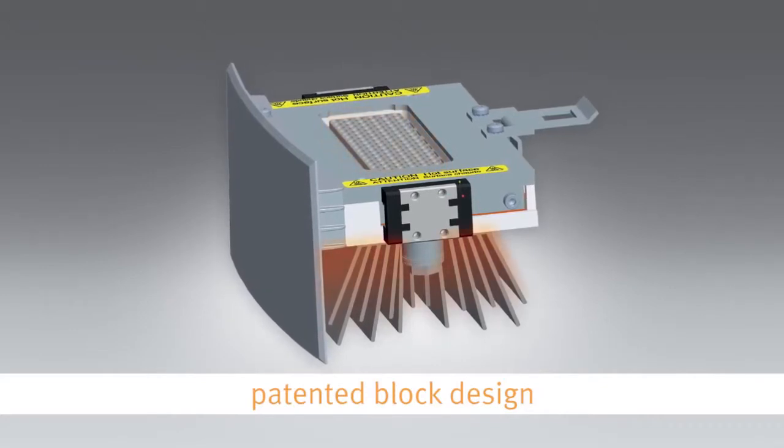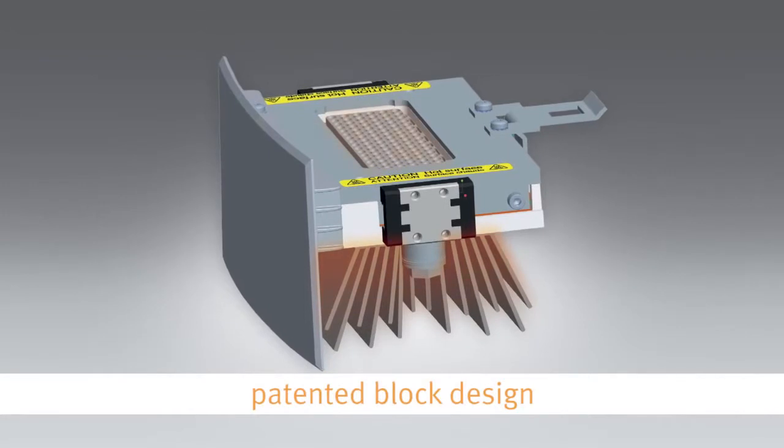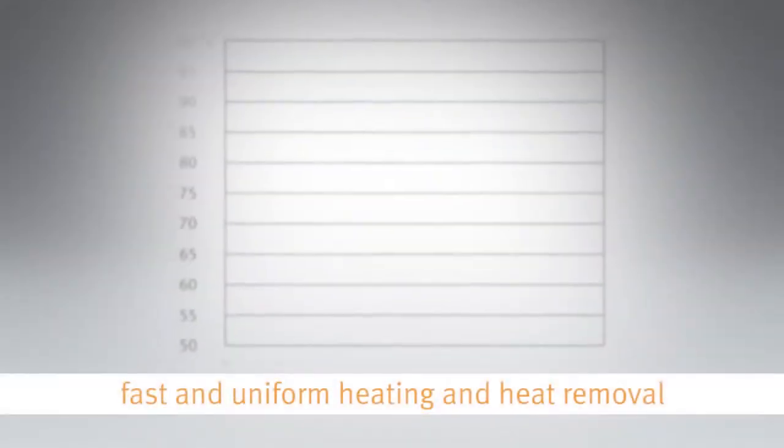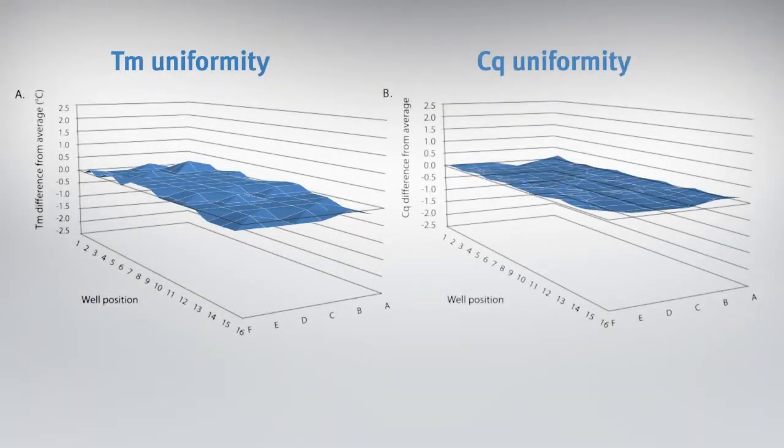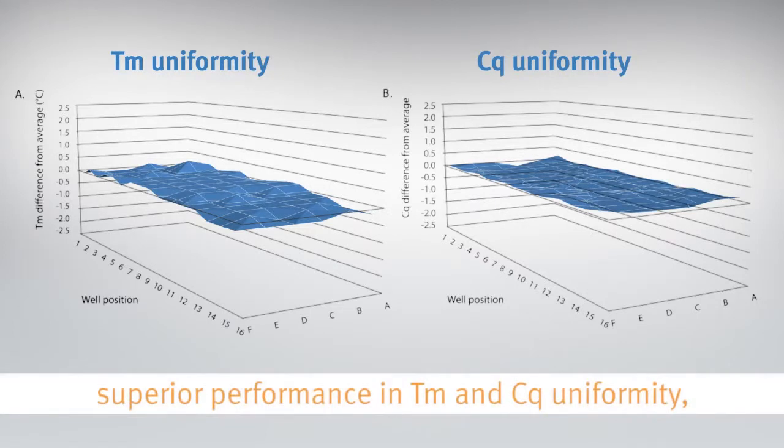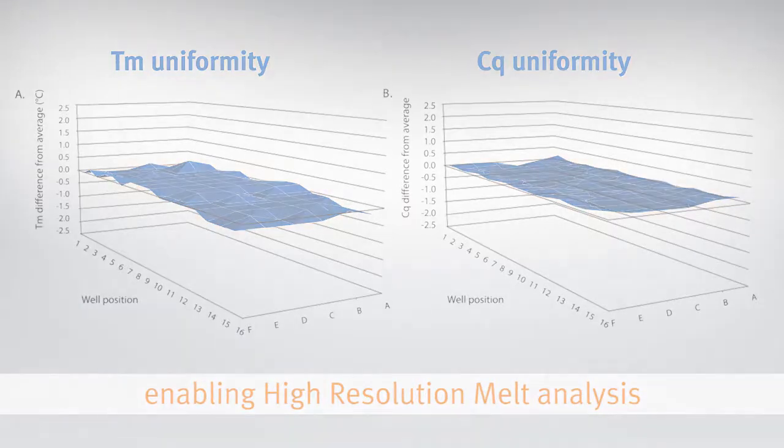The unique patented block design of the PicoReal system ensures quick heating and heat removal over the entire plate area. With ultra-thin wall plastics, the target temperatures are achieved rapidly and the temperature homogeneity performance is outstanding at all three stages of thermal cycling. The uniformity of Tm and Cq are outstanding over the entire plate area. Therefore the quality of your data is ensured, independent of application and protocol.